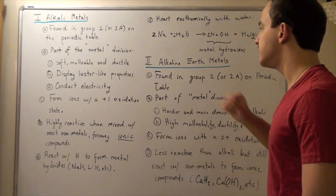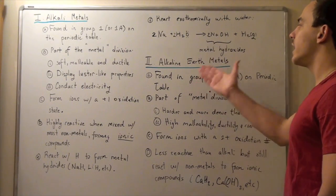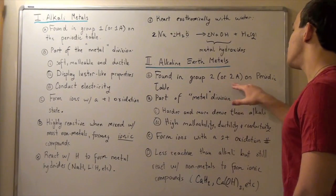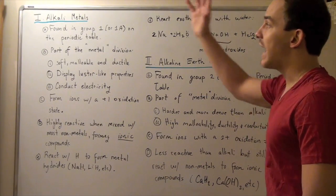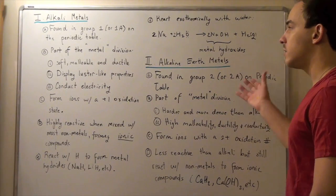Now let's look at the second type of group right next to our alkali metals, known as alkaline earth metals. These guys are in group 2 or group 2A on our periodic table. Just like the alkali metals, they're also part of the metal division.